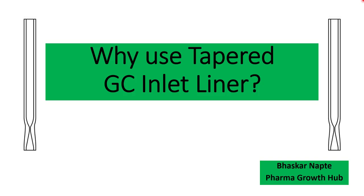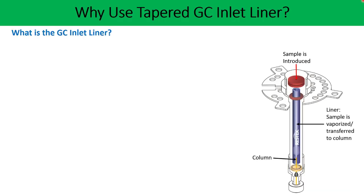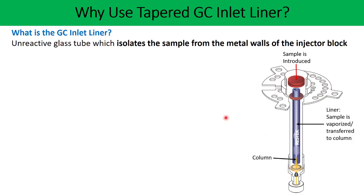You must have seen the inlet liners present in the GC injector port, and there could be different designs one can prefer depending on the application. In the diagram you can see there is a glass tube which actually protects the sample from getting in contact with the metal parts of the injector port. It is very important to understand that this inlet liner must be made of an inert material.